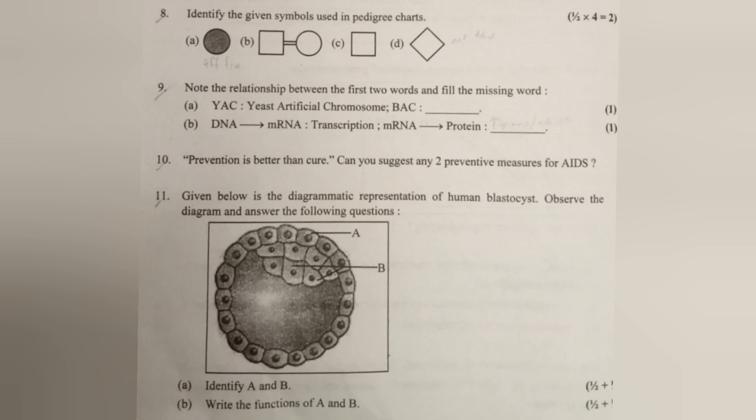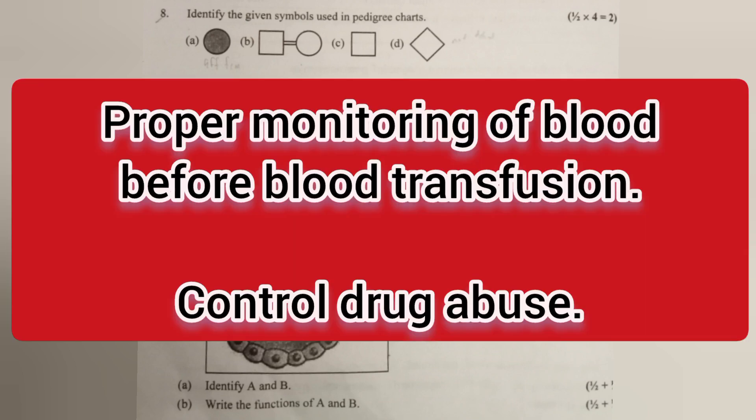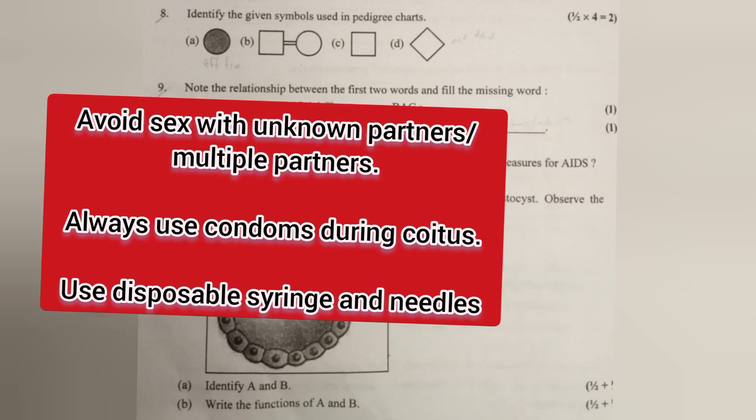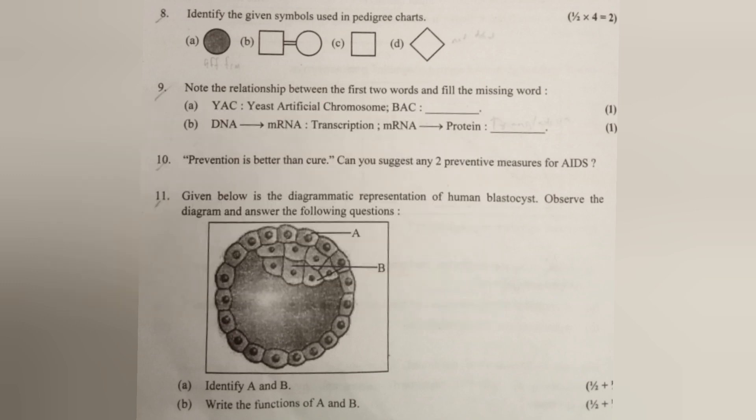Proper screening of blood before blood transfusion, control drug abuse, avoid sex with unknown or multiple partners, always use condoms, use disposable syringes and needles — write any two points.